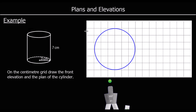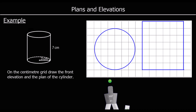What does it look like from the front? The shape you can see from the front will be 6 along — the whole diameter — and 7 tall, and it will look like a rectangle. So we go 6 along and 7 up, and we'll label these. This is our plan and this is the front elevation.